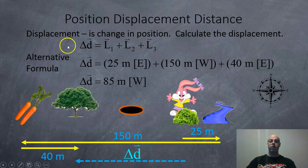There's an alternative formula, it looks like the distance formula, but it's vectors instead. So in this case here, we got our displacement is 25 meters to the east, plus 150 meters to the west, plus 40 meters to the east. And when you add up the easts and wests, you end up getting 85 meters to the west.